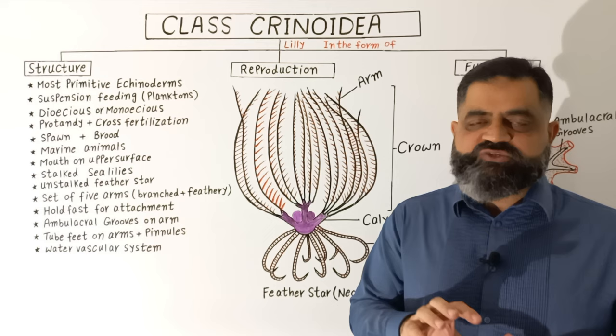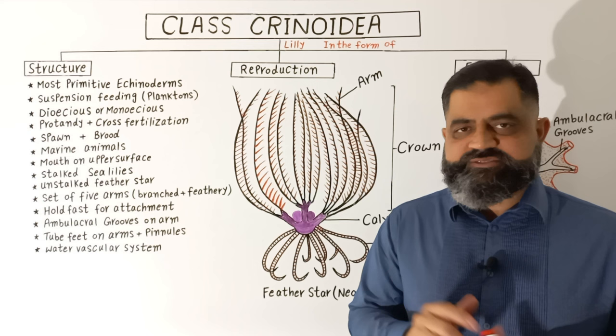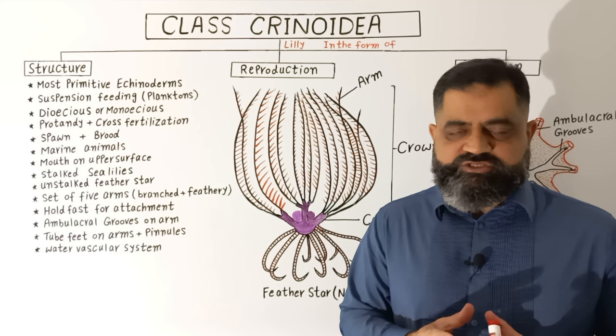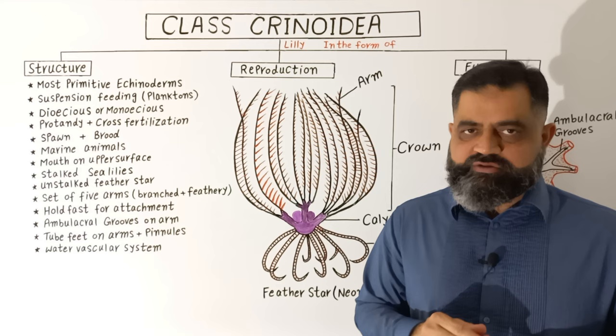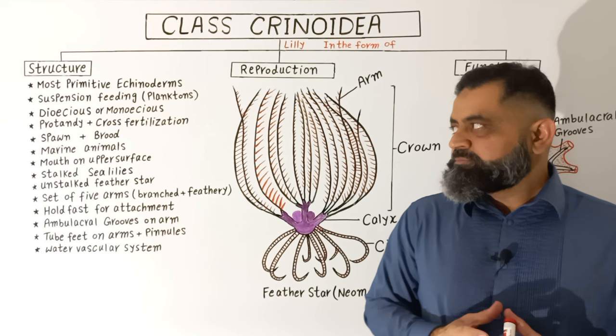Regarding reproduction, these animals are usually dioecious as well as monoecious. Dioecious means male and female animals have separate sexes, while in monoecious species the same animal contains both types of gonads. There is usually cross fertilization, and in monoecious species a process known as protandry takes place, meaning male gametes are formed first and then female gametes are formed. This ensures that fertilization is crossed to maintain proper genetic makeup of their embryos.